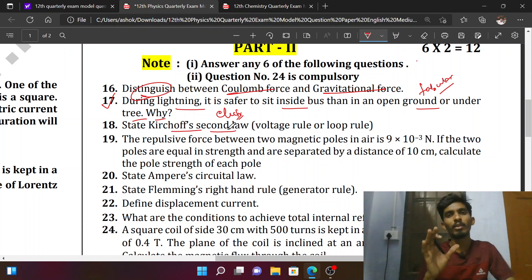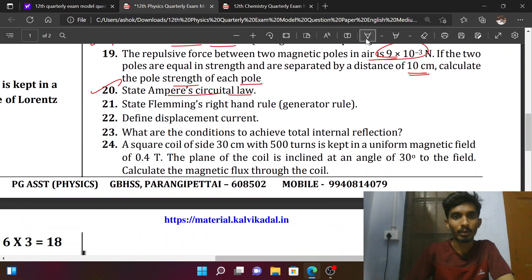If you know the law, you should try to identify how to represent that law. State Kirchhoff's second law, voltage rule or loop rule. The repulsive force between two magnetic poles is 9 × 10^-3 N. State Ampere's circuital law. State Fleming's right-hand rule, generator rule. Define displacement current. This is a bookwork question.